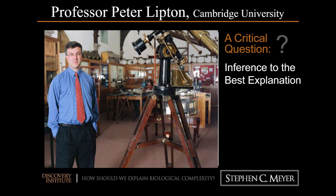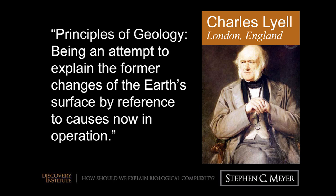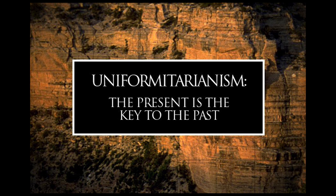Darwin used and defended this method as a properly scientific approach. It raised the question: what does it mean to be the best explanation? One of my Cambridge lecturers, Peter Lipton, wrote a book called Inference to the Best Explanation. There are important criteria for determining what a best explanation looks like in science. Charles Lyell said that when looking at events in the remote past, we should explain them by reference to causes now in operation — the present is the key to the past. When trying to explain remote past events, we should do so by reference to causes we see operating in the present that are capable of producing the effect in question.